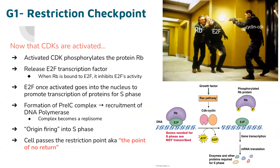Getting into that restriction checkpoint, or point of no return. Now that the CDKs are activated, they will phosphorylate the protein RB, which when bound to E2F — a transcription factor — deactivates it. Once RB is phosphorylated by CDK, it dissociates from E2F, and then E2F is free and active as a transcription factor, promoting transcription of proteins for S phase so that the cell can enter S phase and replicate all of its DNA. Formation of the pre-IC complex involves the recruitment of DNA polymerase, and the complex becomes a replisome. This turns into origin firing into S phase. At this point, the cell passes the restriction point, otherwise known as the point of no return — the cell either has to complete cell division or it dies.